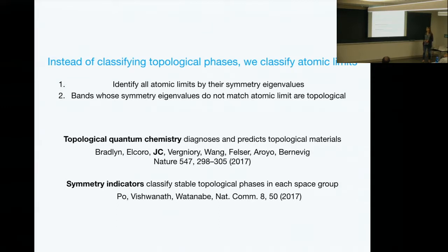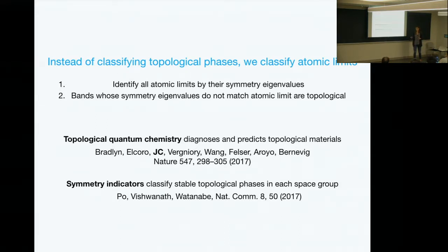The strategy is that instead of classifying the topological phases, we want to find a way to understand the trivial or atomic limit phases — enumerate all the atomic limit phases. For each atomic limit, we give it a key: a combination of symmetry eigenvalues at high symmetry points. Then if you give me a band structure and ask if the valence bands are topological, I look at the symmetry eigenvalues at high symmetry points, compare to my list of atomic limits, and if those eigenvalues don't match any atomic limit, we can be sure those bands aren't deformable to any atomic limit — therefore they're topological.